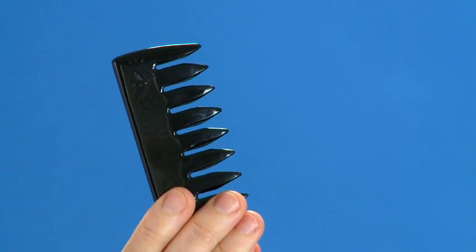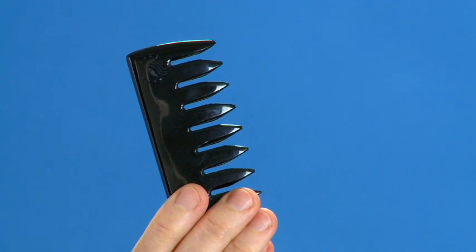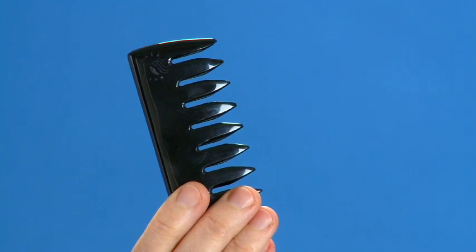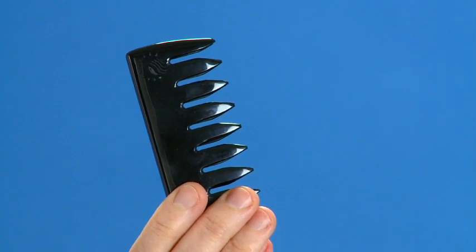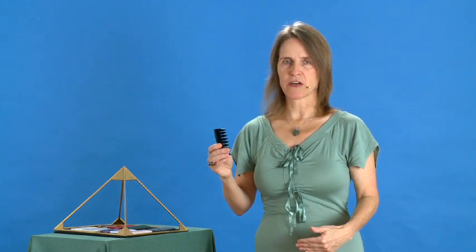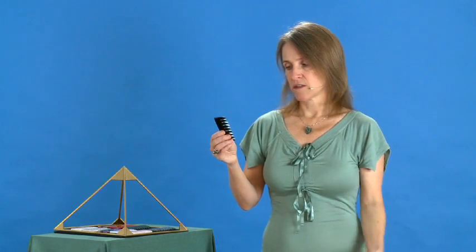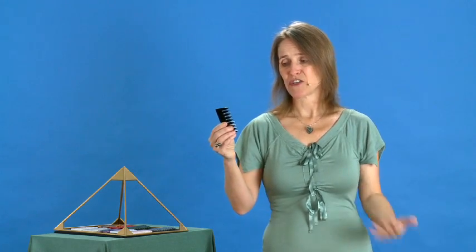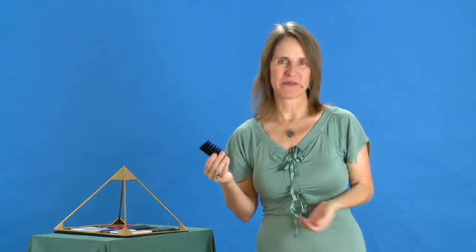The black obsidian gem comb carries the master energy of transformation. And it is destined to help transform any negativity. So it's a great comb to comb out, to really get rid of anything. It's related to the chakra below the root chakra. And it's my favorite comb for getting rid of things, which means transforming something that no longer serves me into something that does.